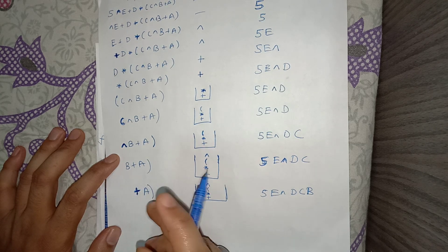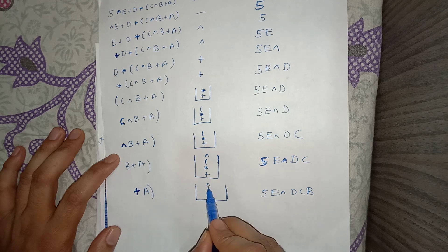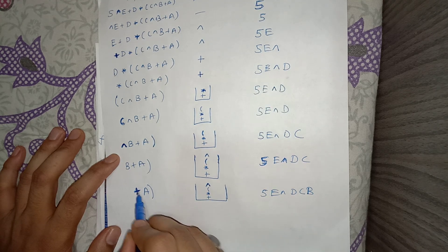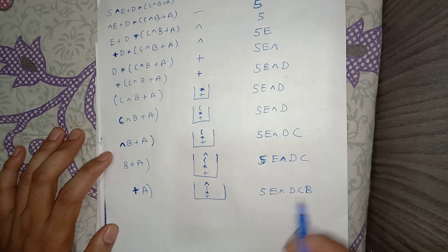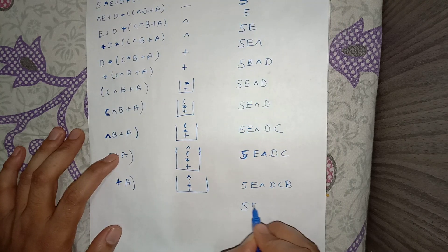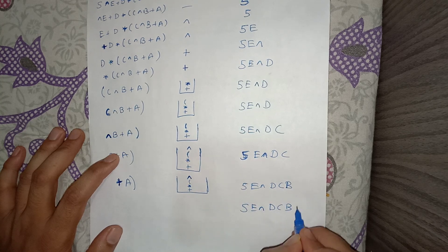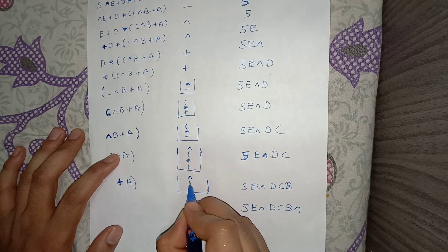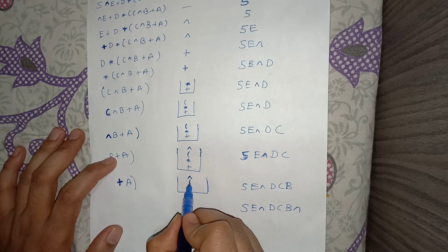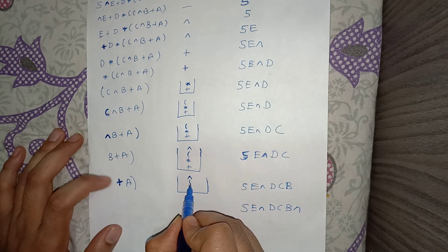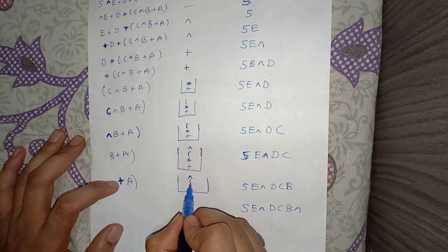The current operator plus does not have higher precedence than the top element XOR, so we pop XOR to the output. Output is now 5, E, XOR, D, C, B, XOR. The next top element is the opening bracket, so we can stop popping.